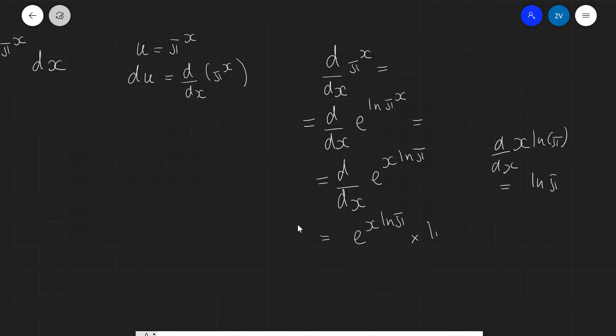Now, remember e^(x ln π), that is equal to π^x times ln π, which is of course equal to π^x times ln π.